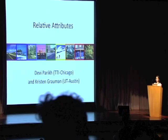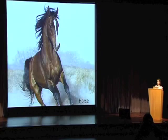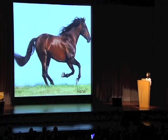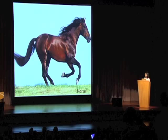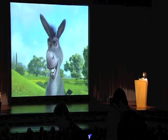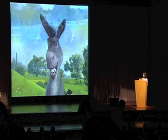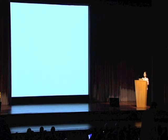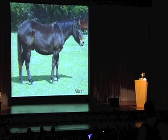Hi everyone, I'm Devi Parikh and this is joint work with Kristin Grauman. Let's say we teach a computer what a horse looks like by giving it several example images of horses. Then we also teach it what a donkey looks like by giving it example images of donkeys. Even intellectually, it seems very unsatisfying if I now have to teach it what a mule is by giving it more example images.